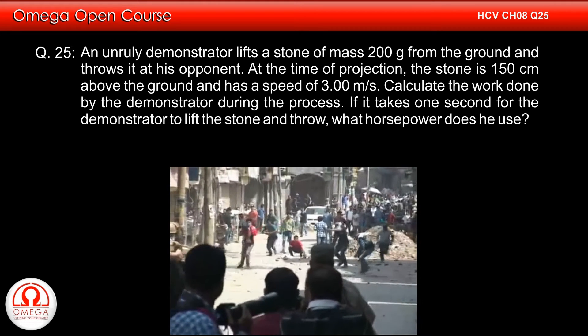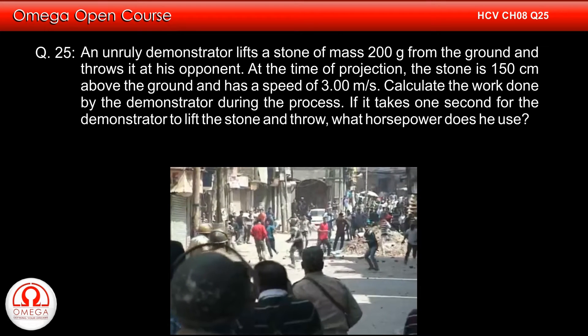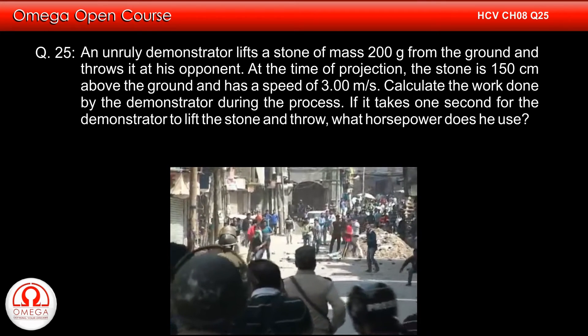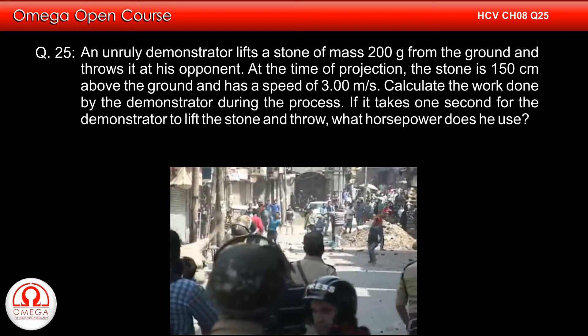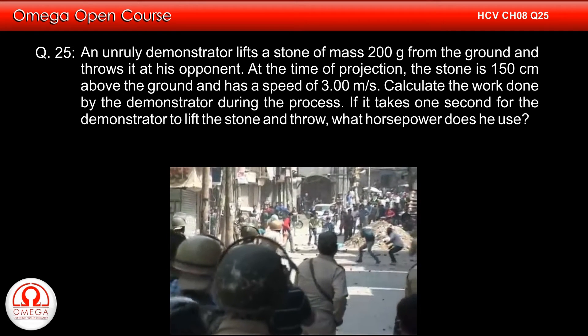At the time of projection, the stone is 150 centimeters above the ground and has a speed of 3 meters per second. Calculate the work done by the demonstrator during the process. If it takes one second for the demonstrator to lift the stone and throw, what horsepower does he use?